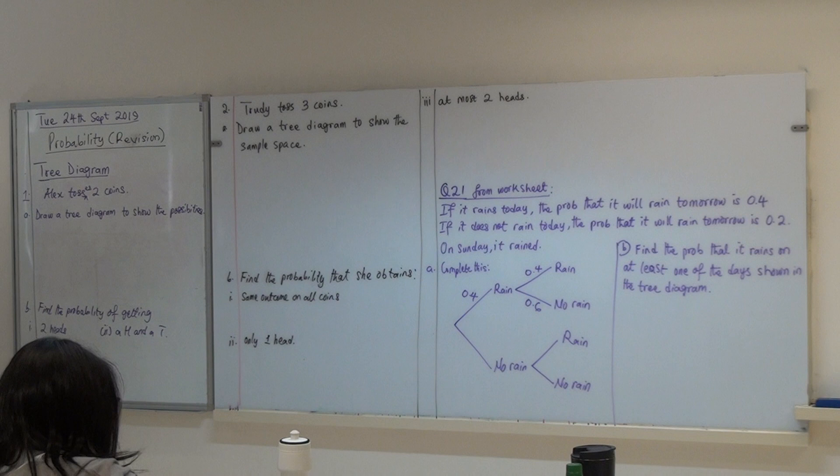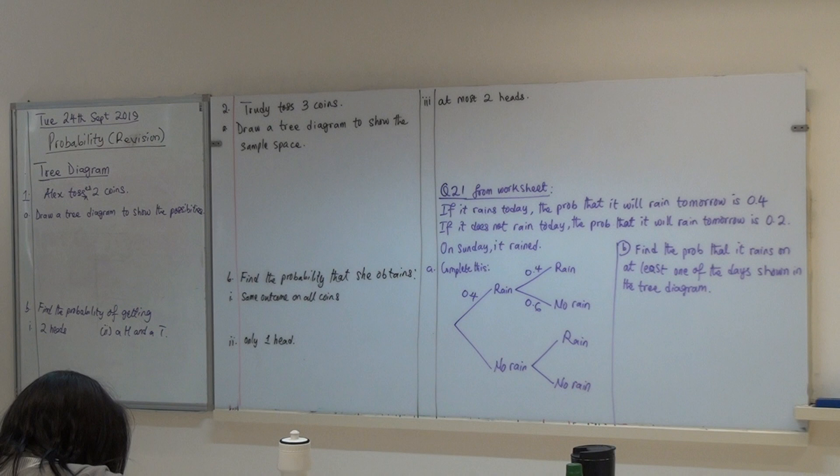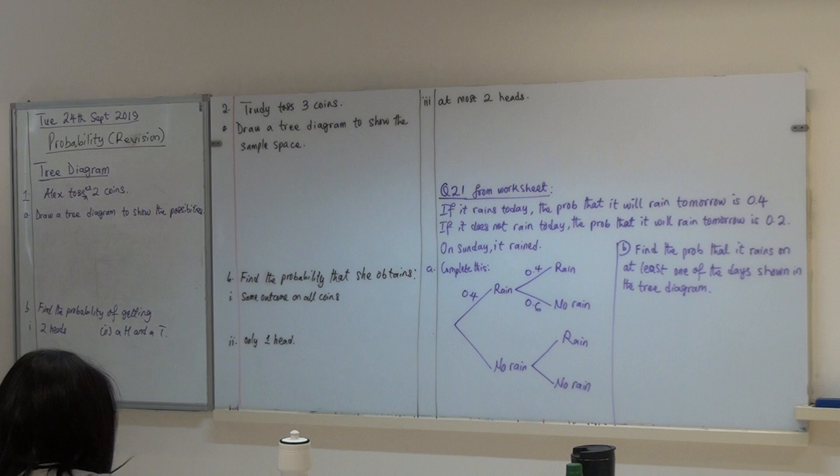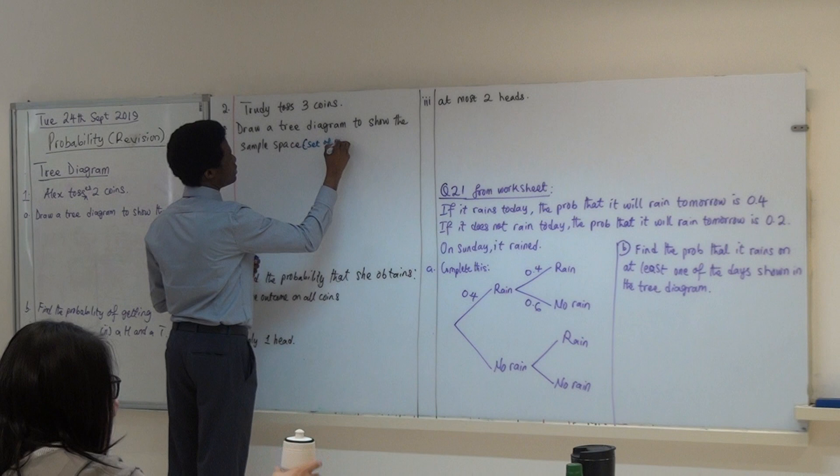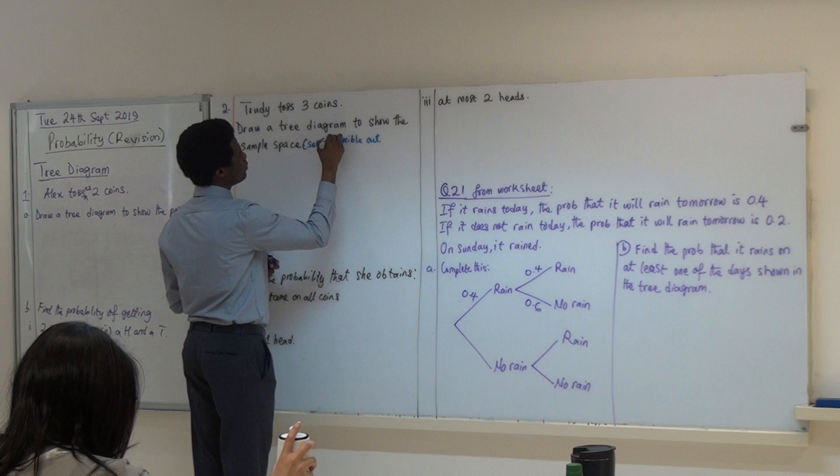Alright, if Alex tosses two points, we want to draw a tree diagram to show the possibilities. Here I use the word possibilities and here I use the word sample space. They're not the same. Sample space is actually the set of possible outcomes, the set of all possible outcomes.